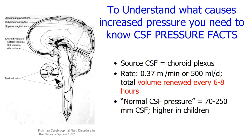To understand why pressure rises, we need to know how spinal fluid is made. CSF is produced in the choroid plexus, which lives in the brain's ventricles, and is renewed every six to eight hours. It's absorbed by arachnoid granulations located near the venous sinuses, and circulates around the cerebellum and brain. The function of CSF is to make our brains buoyant inside the skull, protecting them from injury.